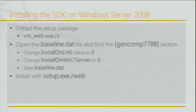One note: when you're installing the Windows Phone SDK on a server environment, it will say the platform is unsupported. You'll need to unpack the executable and look for a file called baseline.dat. Within there, there's a section called GenComp7788. There are a couple of values you need to switch: set 'install on LHS' to zero, and set 'install on Win7 Server' to zero as well. Save the file and rerun the executable — that will allow you to install the SDK on Windows Server 2008.